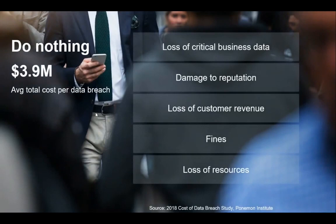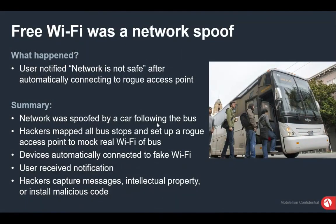If a company is not ensuring device security posture, they risk losing critical business data, damaging reputation, losing customer revenue, facing fines, and losing resources. A real example: free Wi-Fi on a bus — a hacker sitting in the same bus publishes a fake SSID, and people connect without knowing if it's genuine or from a third party. The moment they connect to the malicious or unsecured Wi-Fi, their data is already compromised.